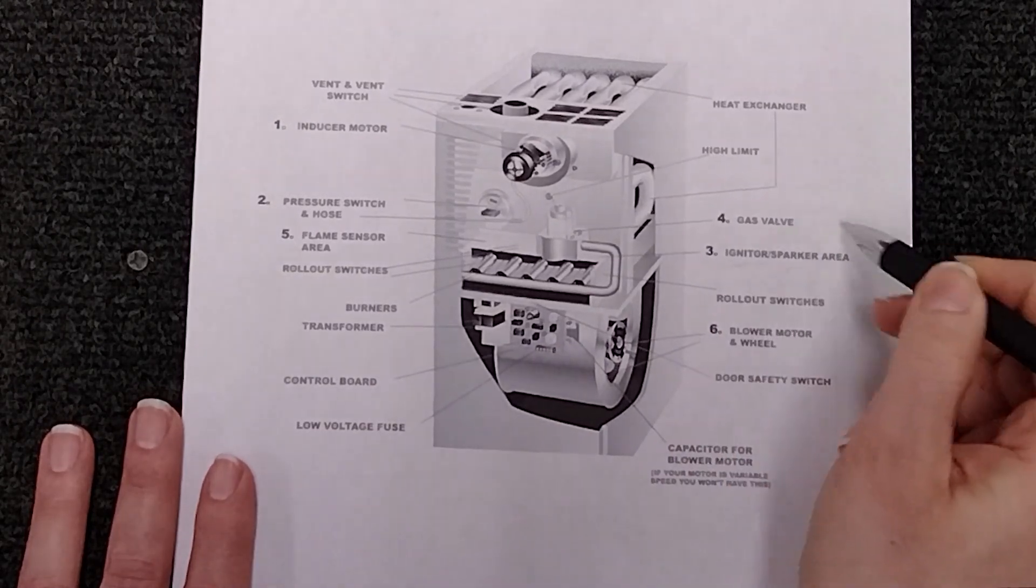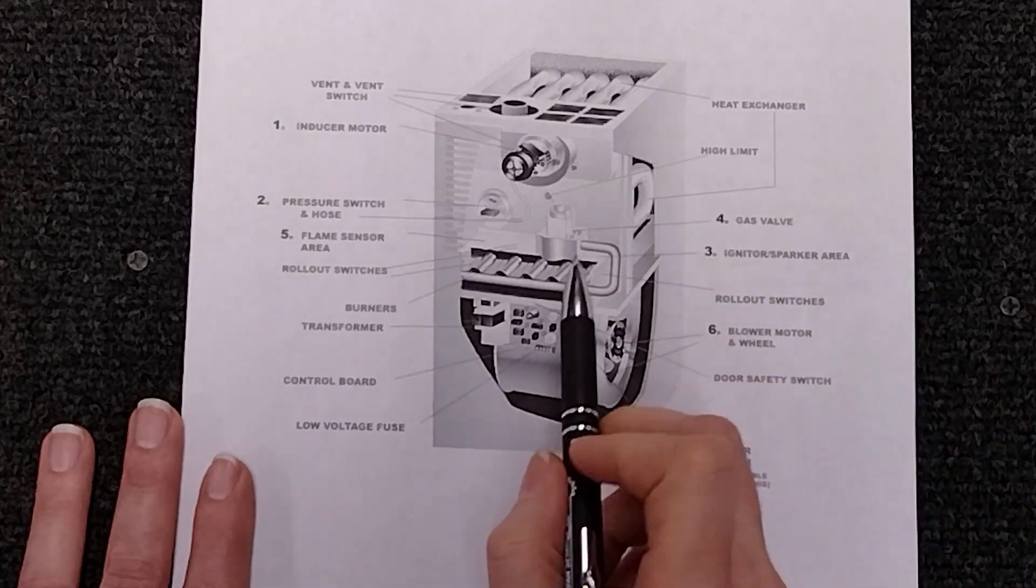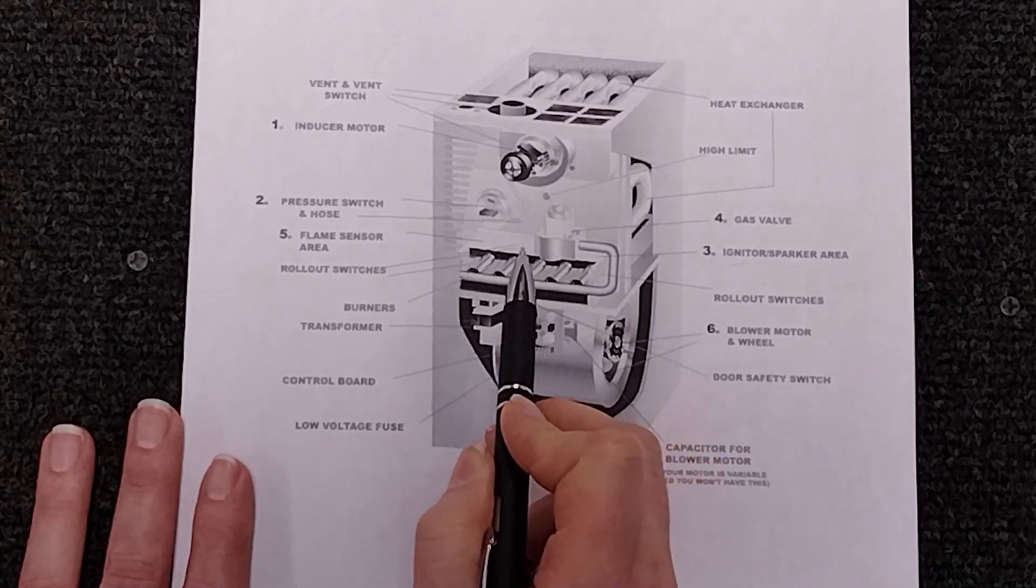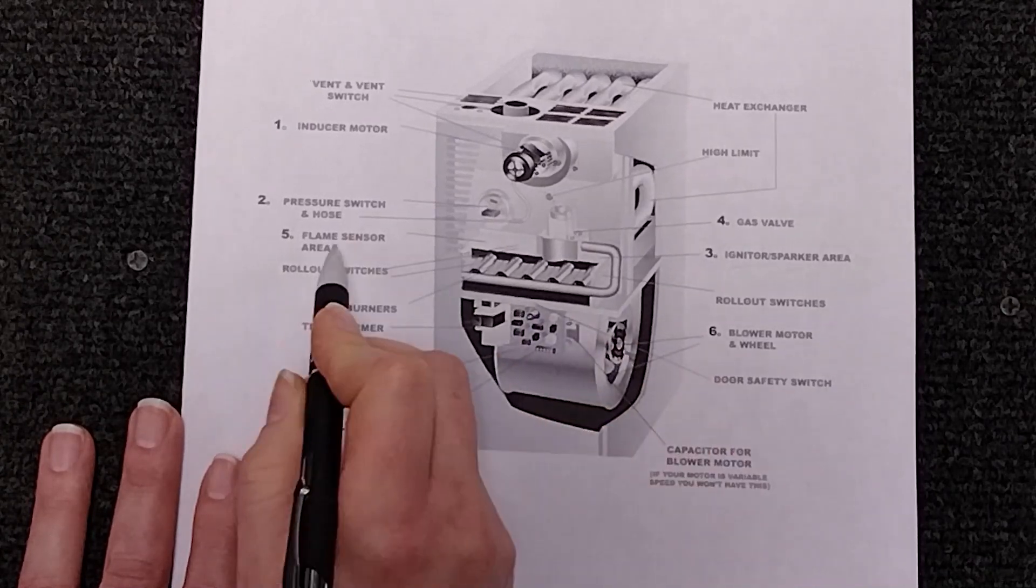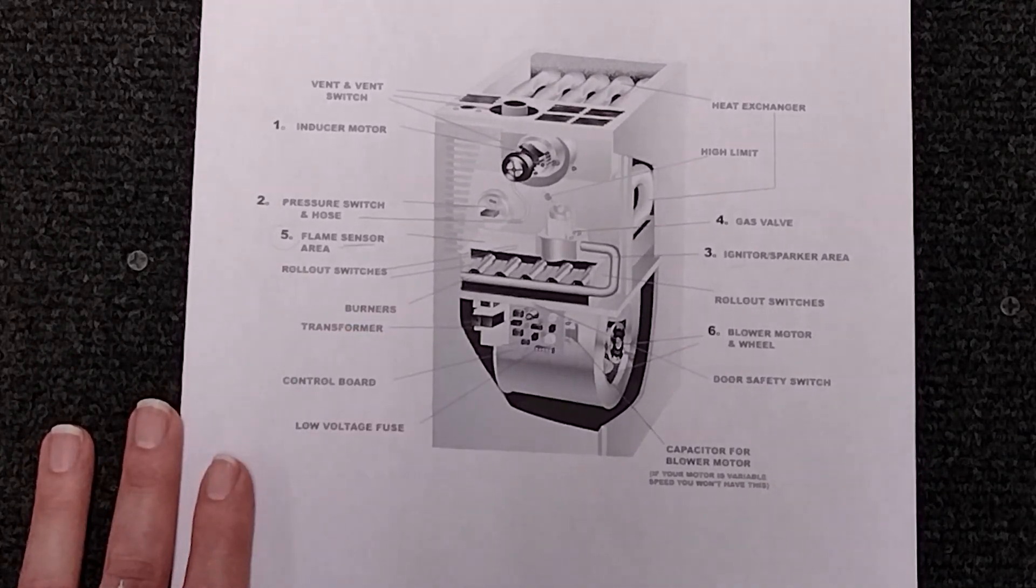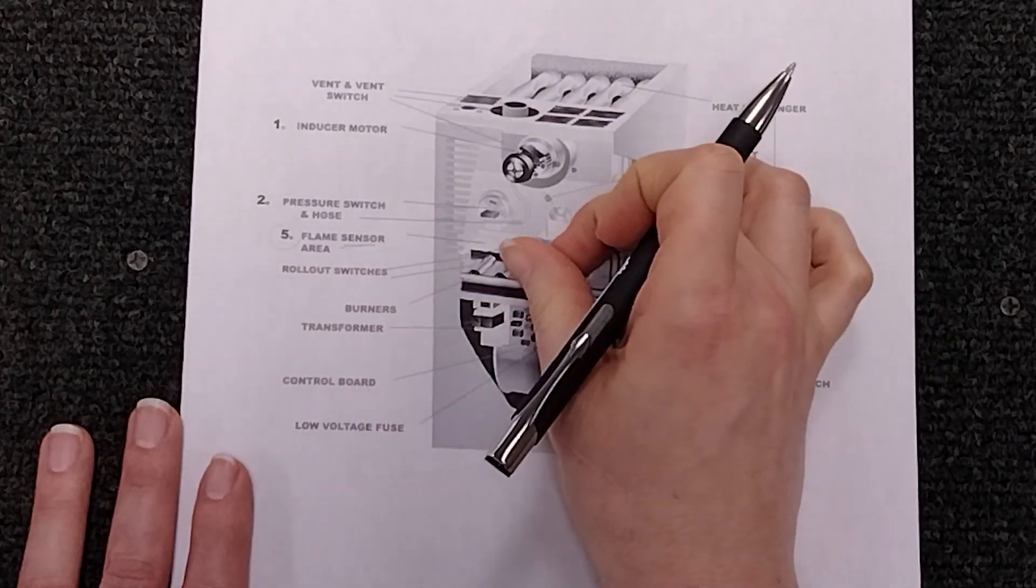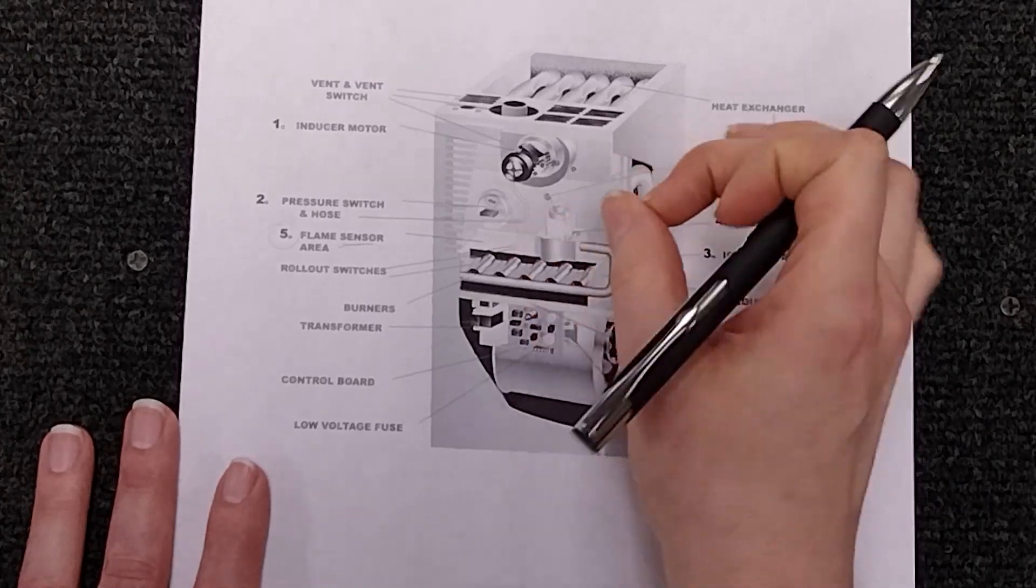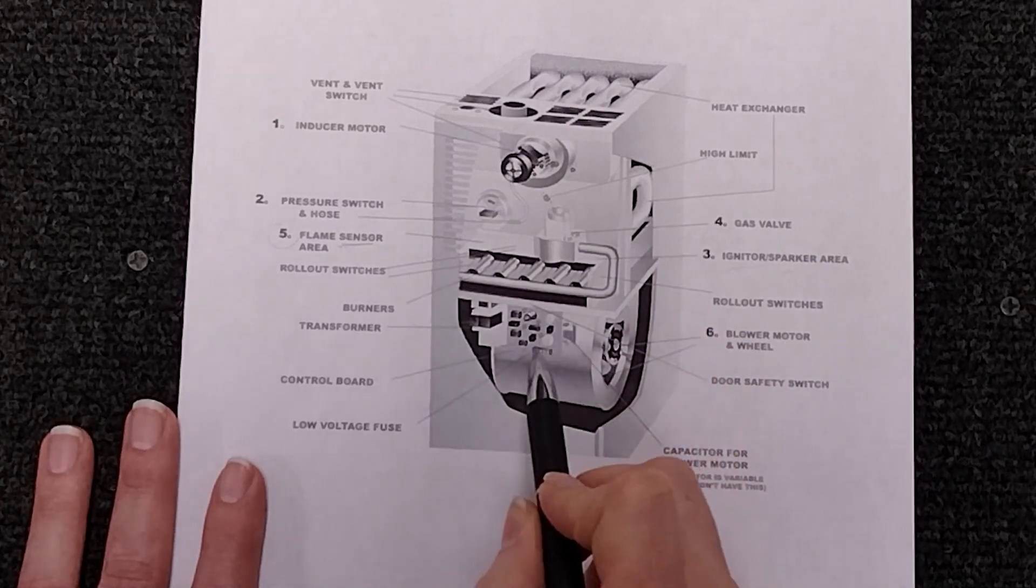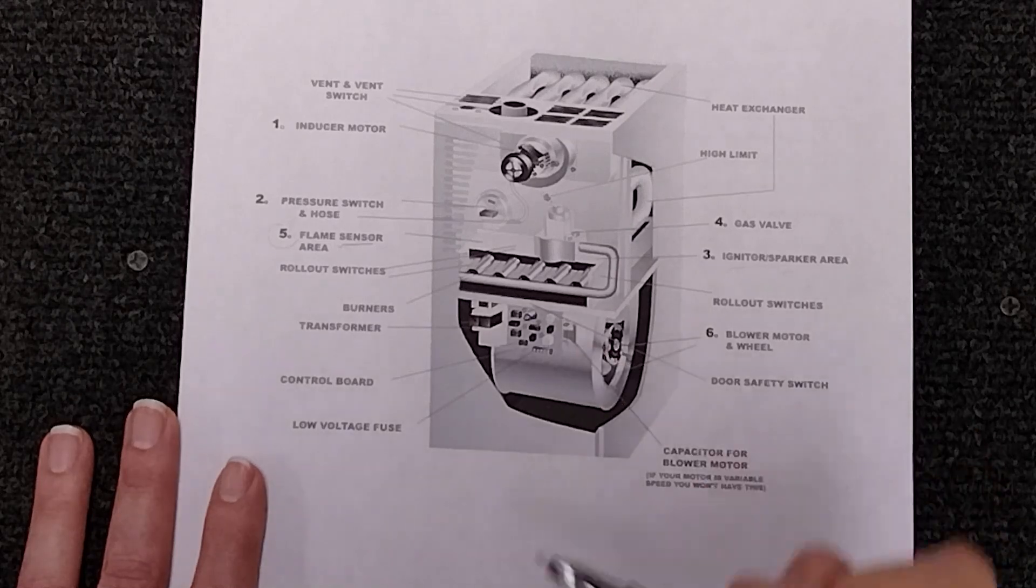So from there as we said after the igniter lights the gas valve comes on stays open and lights. Next we go over to it's going to light up go all the way across those burners to your flame sensor and there's some really cool science behind flame sensors but we'll get into that later. Just know that the flame sensor is going to send the tiniest millivolt back to the board and that board knows that everything is good and we're going to keep it on.